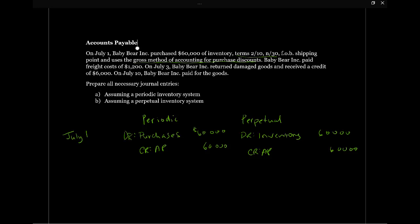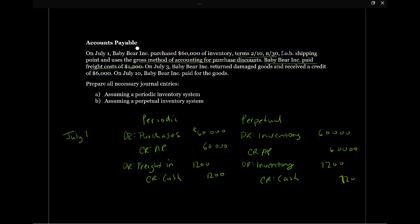Next, we also need to record the freight costs of $1,200 — presumably on July 1st as well. Since we paid it, the credit is to cash in both systems. The debit differs: in the perpetual system, freight costs are capitalized directly to inventory; in the periodic system, the debit goes to freight in. So again, the periodic system uses separate accounts for different transaction types, while the perpetual system records everything through inventory. The amount is $1,200.